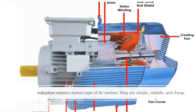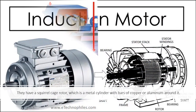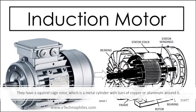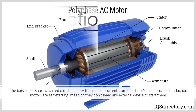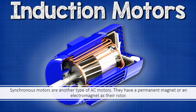Induction motors are the most common type of AC motors. They are simple, reliable, and cheap. They have a squirrel cage rotor, which is a metal cylinder with bars of copper or aluminum around it. The bars act as short-circuited coils that carry the induced current from the stator's magnetic field. Induction motors are self-starting, meaning they don't need any external device to start them.